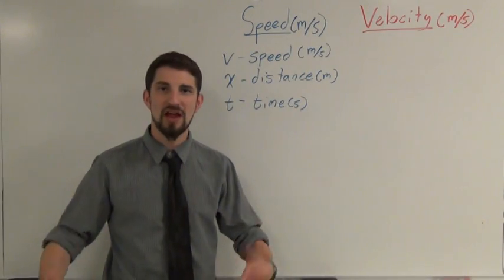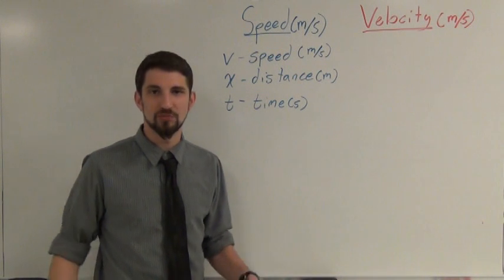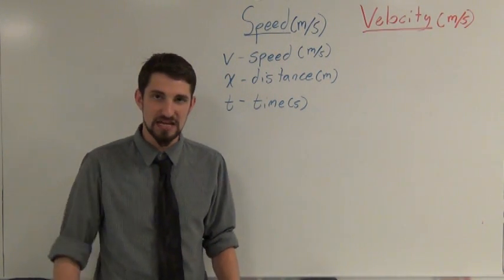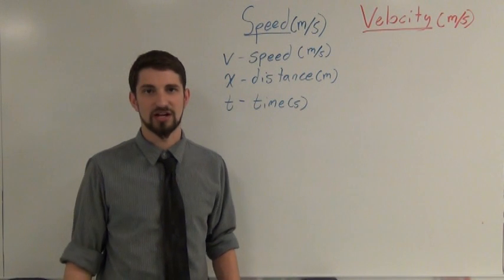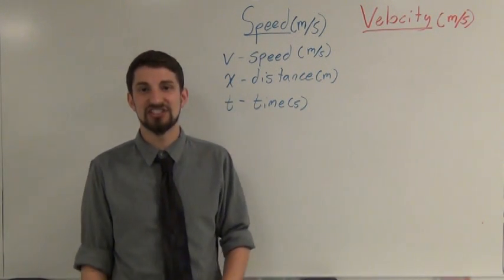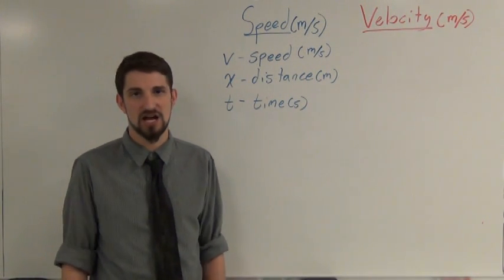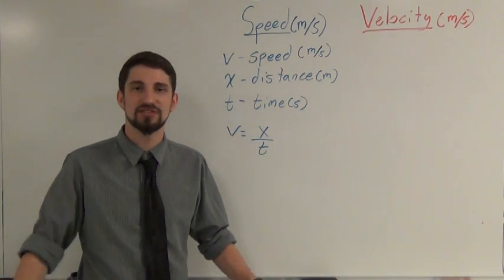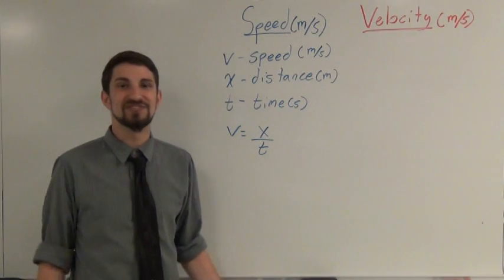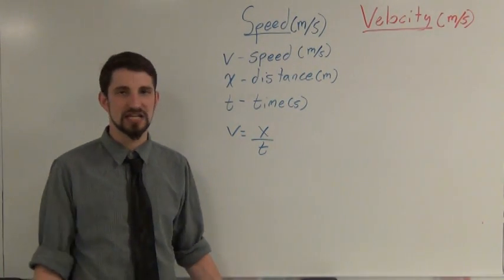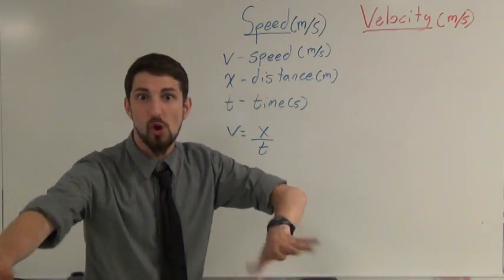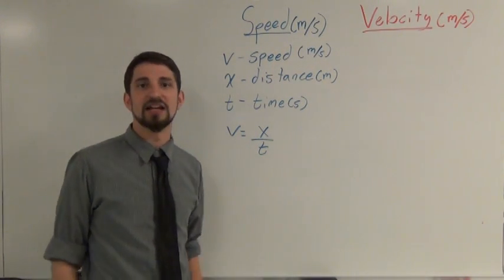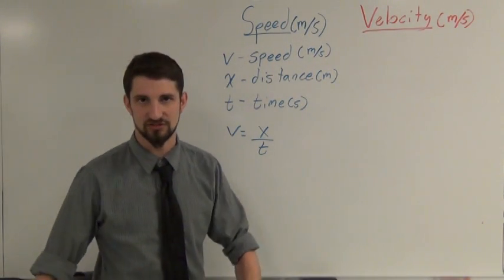Now we're going to put in the math part. To look at the math of motion, we need to put symbols to things. We're going to call v speed, with a unit of meters per second. We'll use x for distance and t for time. The definition for speed is distance over time, so our formula is v equals x over t. They're just variables — don't get confused.